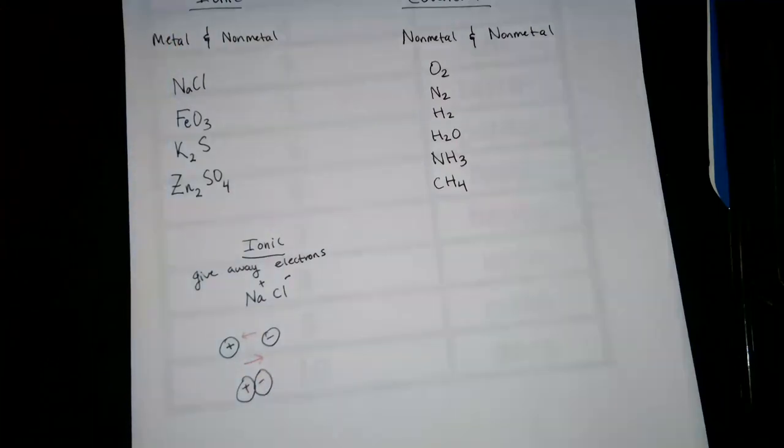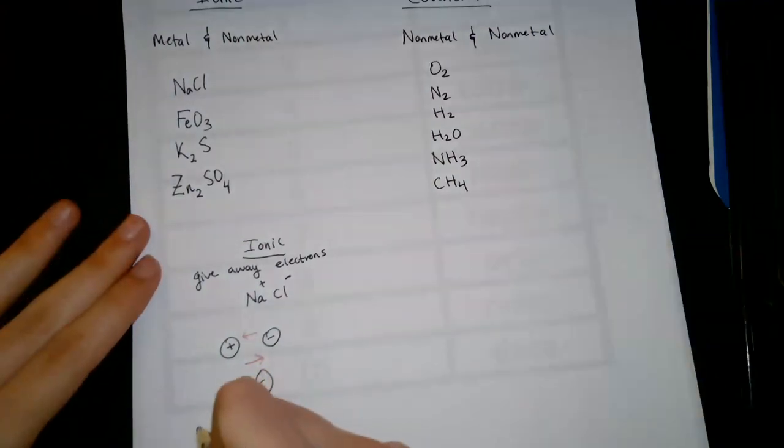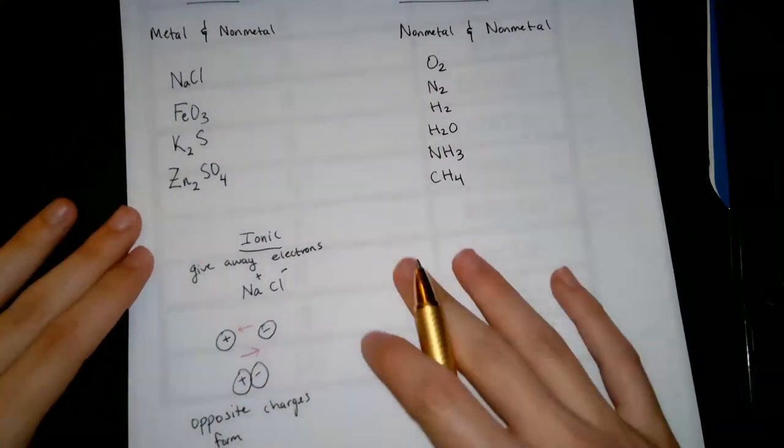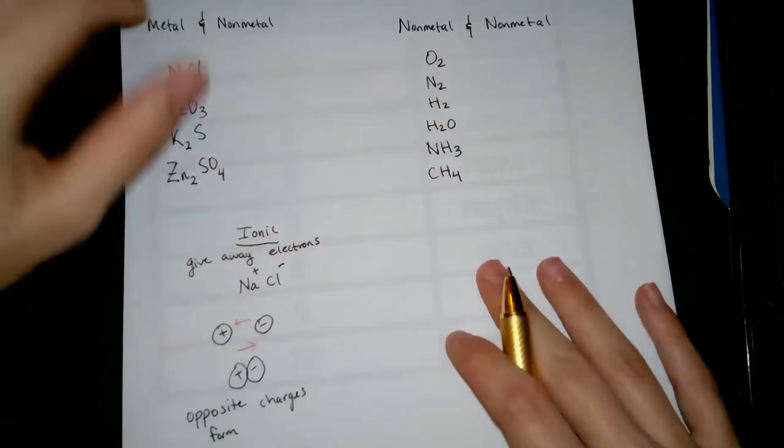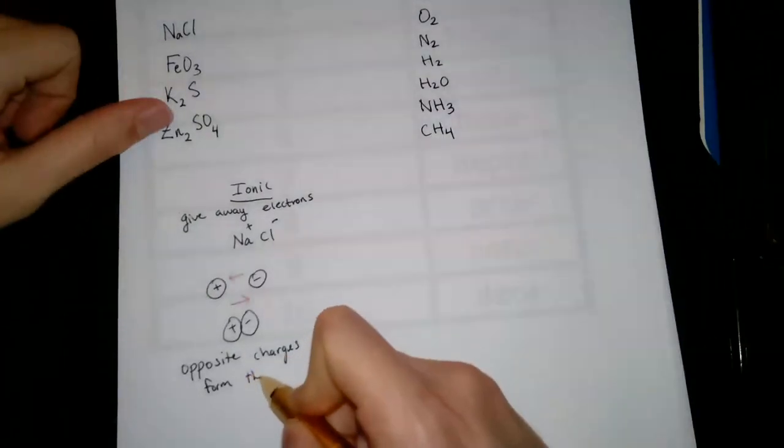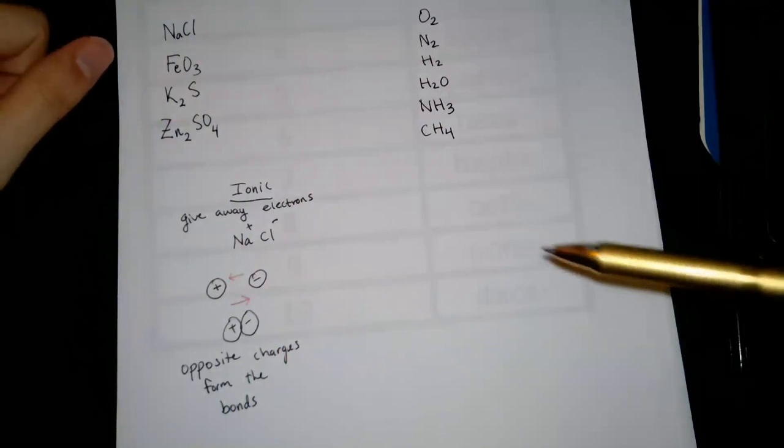And so that's what holds these ionic compounds together. So just remember that the opposite charges form the bonds, or I guess they are the bonds. And so that's ionic. The metals give away the electrons.